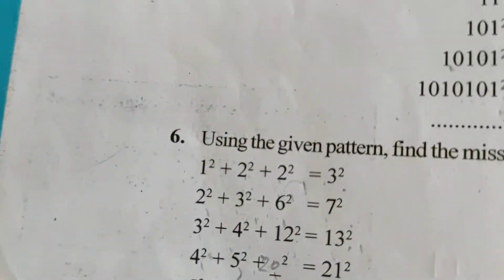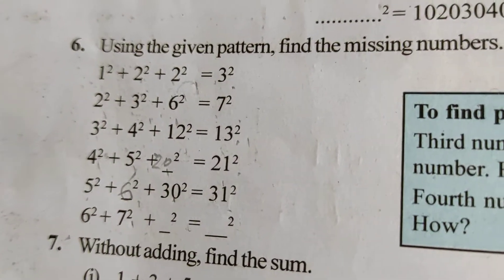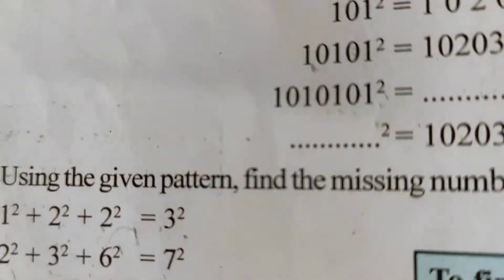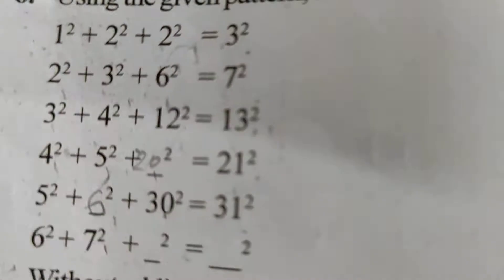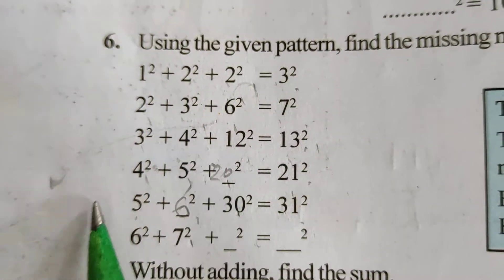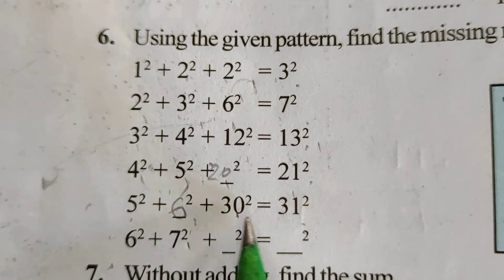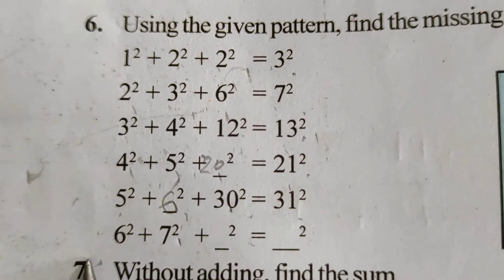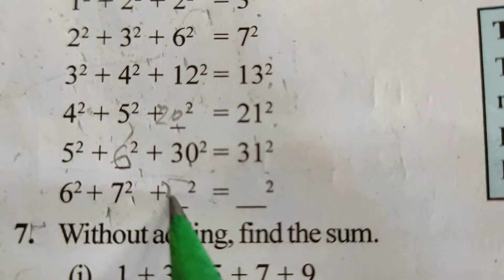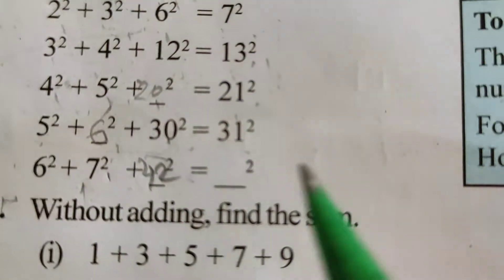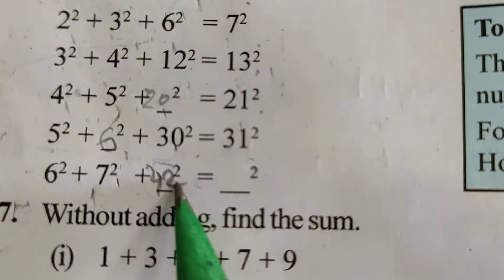So you can see here: 1 2's are 2, 2 3's are 6, 3 4's are 12, 4 5's are 20, 5 6's are 30, and 6 7's are 42. So 42, and the previous number will be after 43.